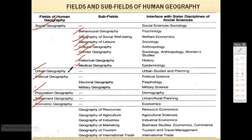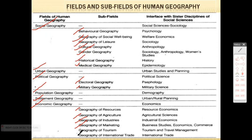Urban Geography doesn't have a sub-field, so there is a dash. Political Geography can be divided into Electoral Geography and Military Geography. Population and Settlement Geography also don't have sub-fields — there is a dash for those. Finally, Economic Geography can be further subdivided into Geography of Resources, Geography of Agriculture, Geography of Industries, Geography of Marketing, Geography of Tourism, and Geography of International Trade.